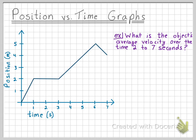We want to know the object's average velocity over the time 2 to 7 seconds. We have our average velocity equation, which we then can expand, because we know that the delta symbol always means final minus initial.